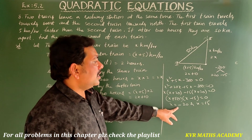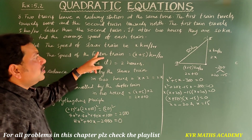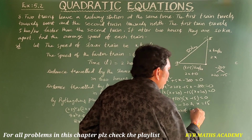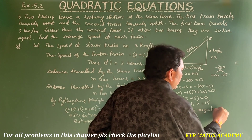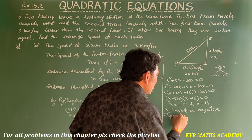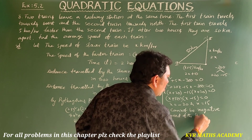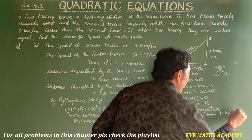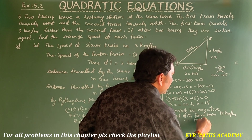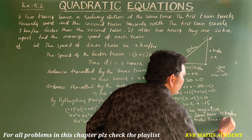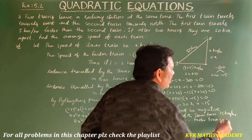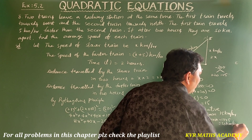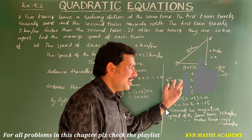Therefore x = minus 20 or x = 15. Since speed cannot be negative, x = 15. So the speed of the slower train is 15 kilometers per hour, and the speed of the faster train is x plus 5 = 15 plus 5 = 20 kilometers per hour.